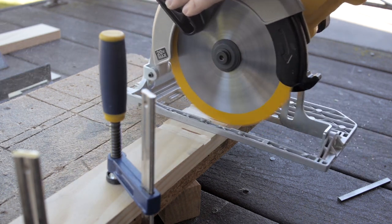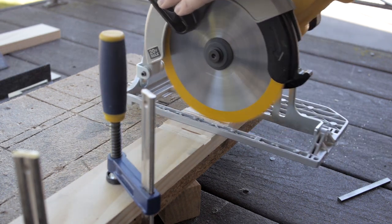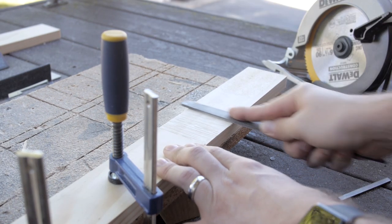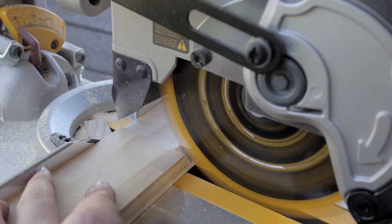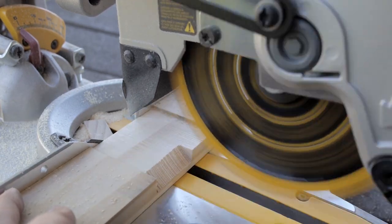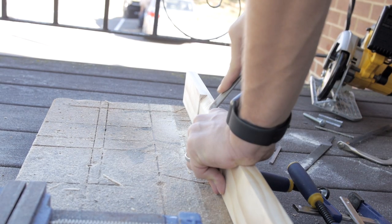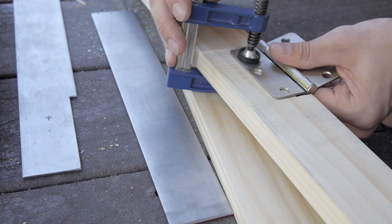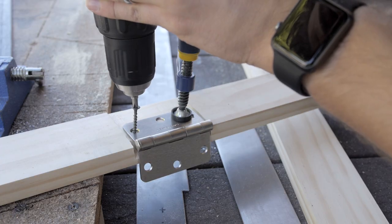A recess was cut for the hinges so they would rest flush with the surface of the wood. A special recess was also cut to accommodate the hinge. The hinges must be very carefully positioned so that it pivots correctly.